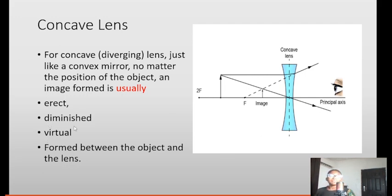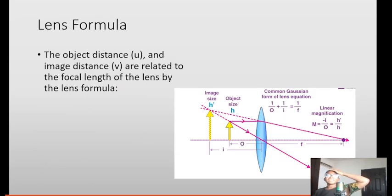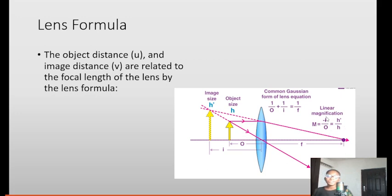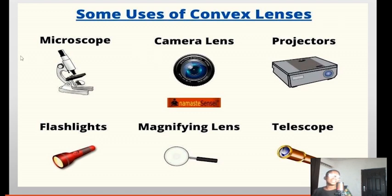The lens formula: the object distance u and image distance v are related by: 1/f = 1/v − 1/u. The magnification formula is: image height over object height, which equals v over u. The distance from the optical center to the object is the object distance, and from the optical center to the image is the image distance. Uses of the convex lens include: microscope, camera lens, projectors, flashlights, magnifier lens, and telescopes.